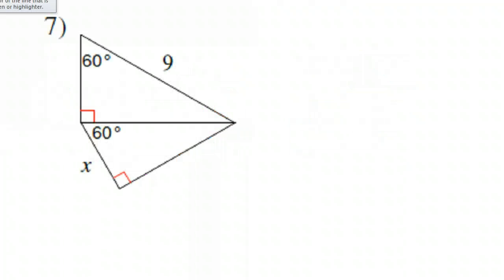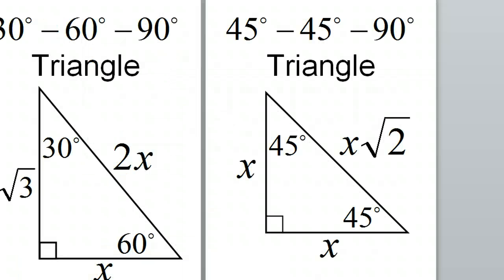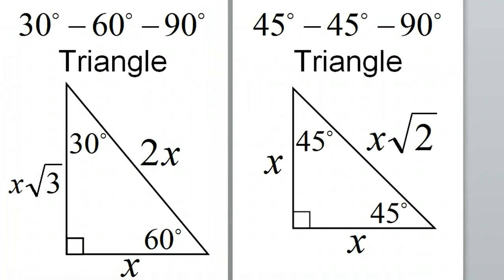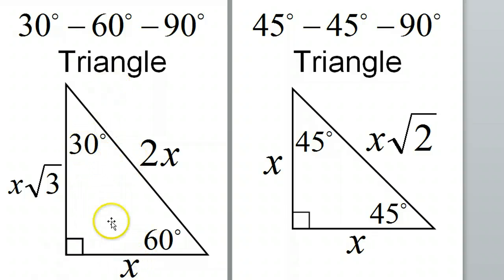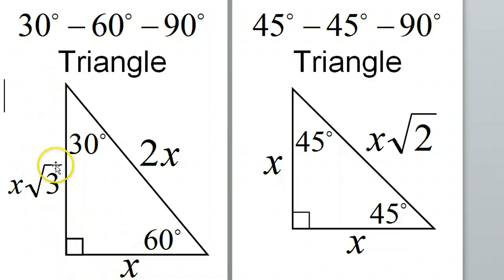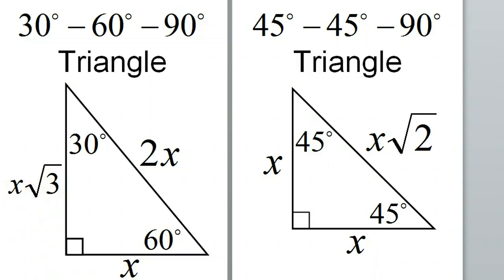Let's get after problem number seven. Now we're branching out — see that 60 degrees? That means this must be 30 degrees, and that's 60 degrees, so this must be 30 degrees. Let's take a quick peek at the pattern for a 30-60-90 triangle. It's all about the short leg, which is always across from the 30. If we call that short leg X, the hypotenuse will be two times X — double. And you get the long leg, across from the 60, by taking the short leg and sticking a radical three on it.